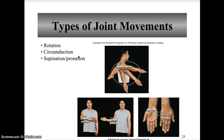Circumduction is the moving of a limb in a circular, cone-shaped manner — for example, doing arm circles during exercise. Supination is when you put the thumbs up, as seen in the anatomical position. Pronation is thumbs down.